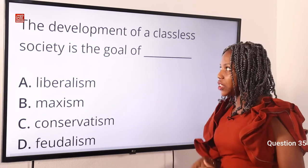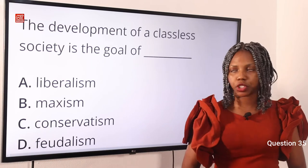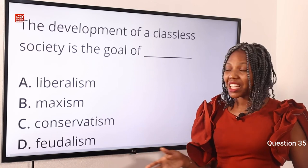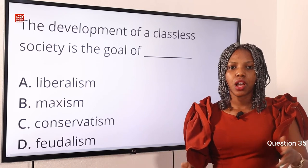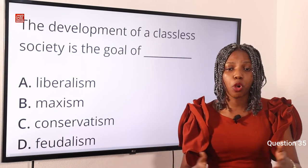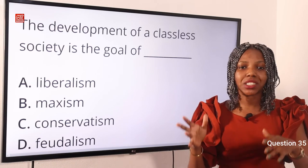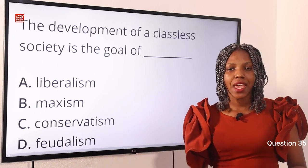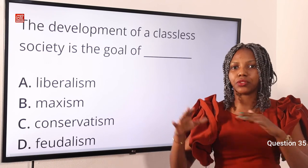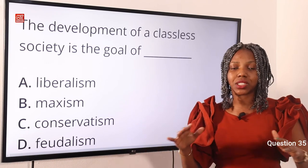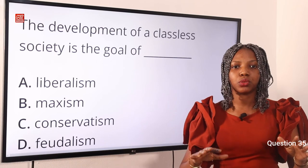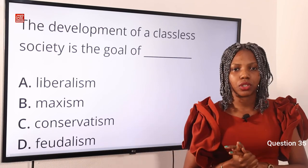Question 35. The development of a classless society is the goal of dash. Option A, liberalism. Option B, Marxism. Option C, conservatism. Option D, feudalism. The answer is Marxism — Option B. Marxism is a theory founded by Karl Marx which enhanced communism. Communism is a system in which all properties are owned by the community, where a person contributes according to their ability and receives according to their needs. This develops a classless society based on equity.